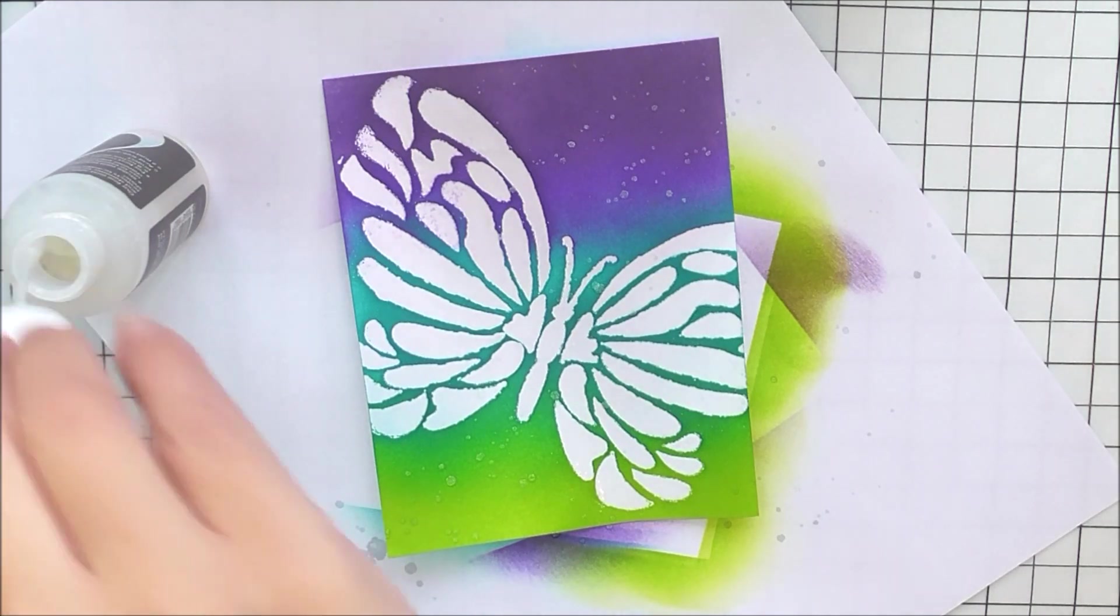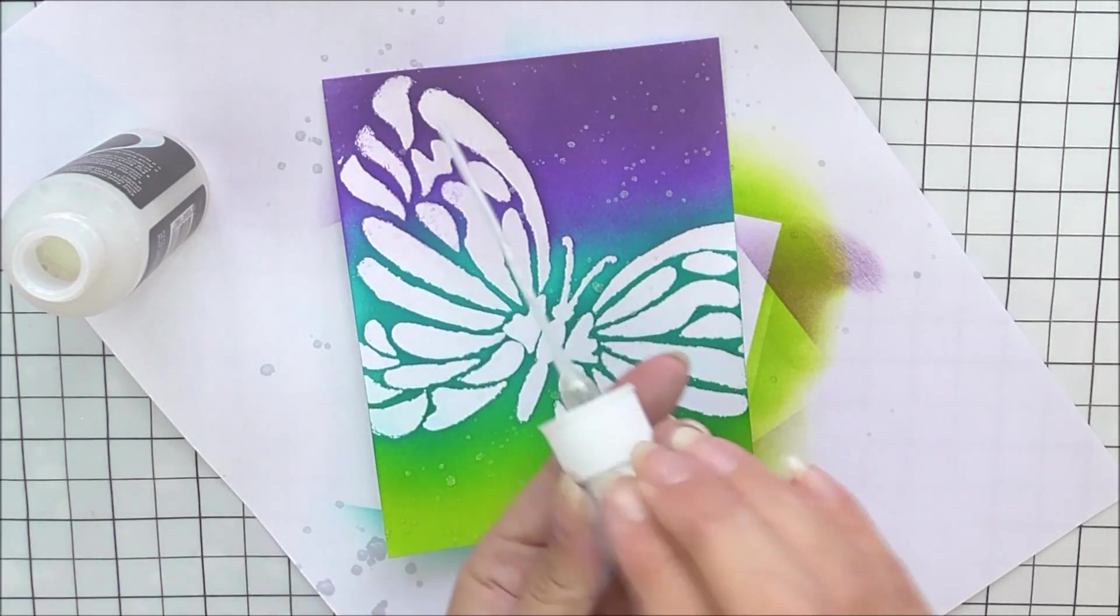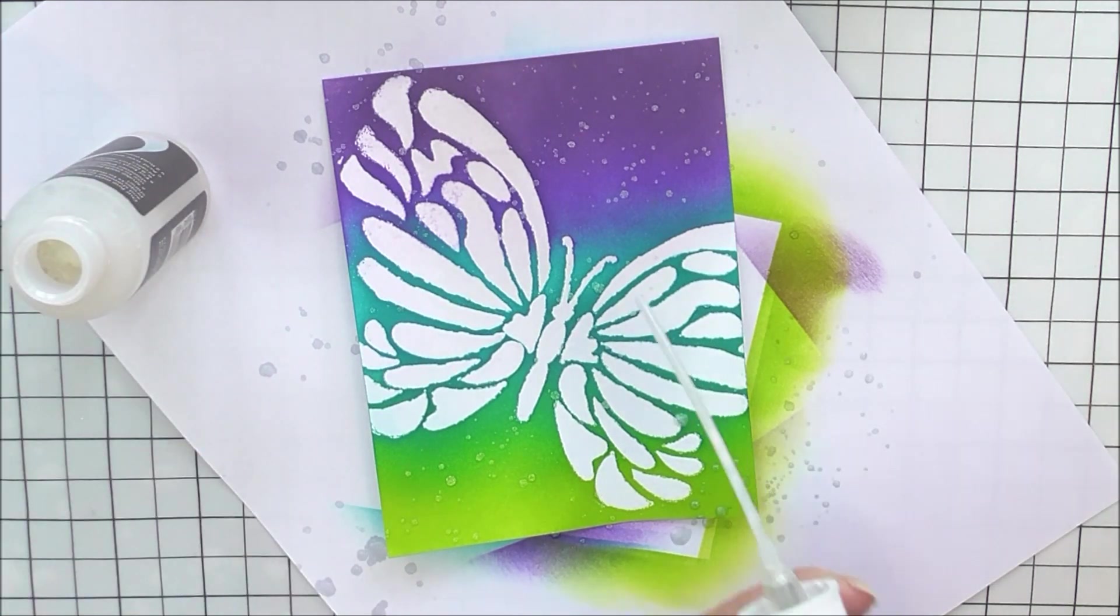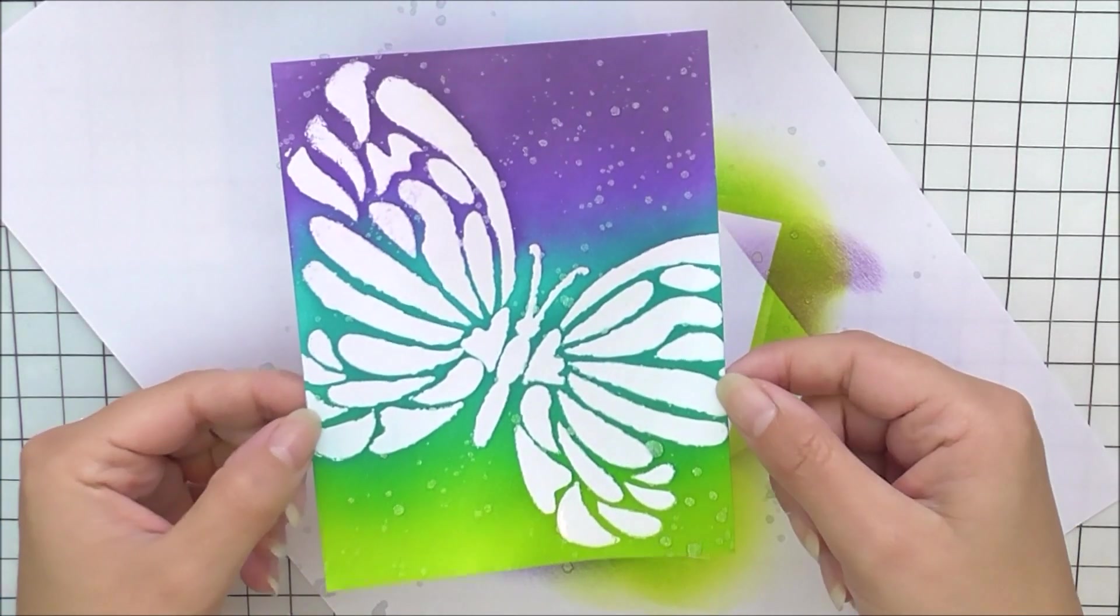It's going to create a beautiful effect. It's going to bleach the ink that we've just added to the panel and give us some shimmer as well. It is very, very pretty. Once I've added enough splatter, I'm just going to move this off to the side and leave it to dry.